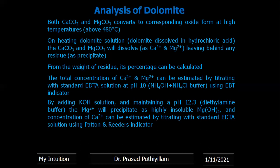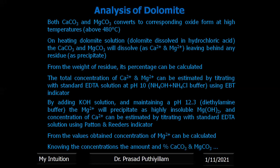By adding a strong base like KOH solution and maintaining a high pH of around 12.3 using diethylamine buffer, magnesium ions will be converted into insoluble magnesium hydroxide and only calcium ions remain in solution to react with EDTA. The calcium ion concentration is estimated by titrating with EDTA; at this pH, EBT cannot be used, so we use Patton-Reeder's indicator. From the values obtained, the concentration of Mg²⁺ can be calculated.